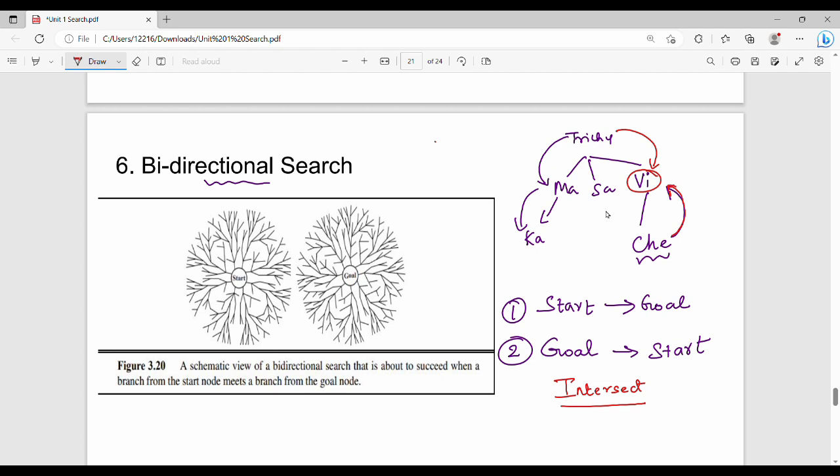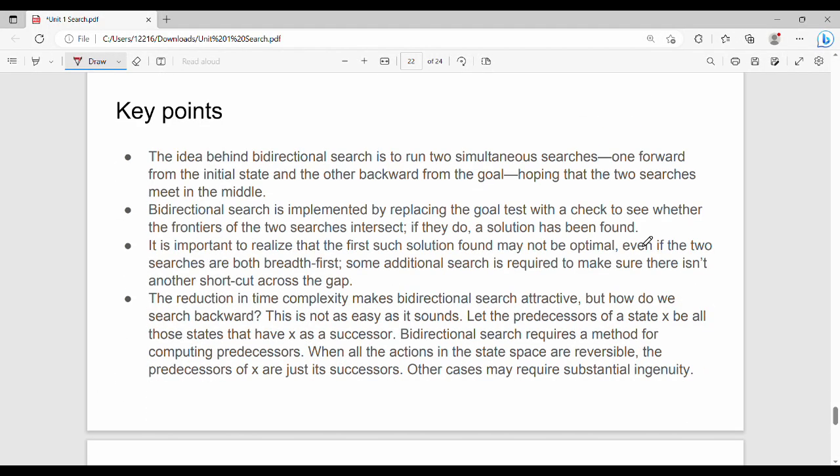So bidirectional, what we search for bidirectional. We are going to search for this algorithm. Just look at key points. The idea behind bidirectional search is to run two simultaneous searches: one forward from the initial state and the other backward from the goal state, hoping that the two searches meet in the middle. How do we implement this? Bidirectional search is implemented by replacing the goal test with a check. How do we check to see whether frontiers of the two searches intersect? Forward search and backward search. There is a two meet, touch solution.